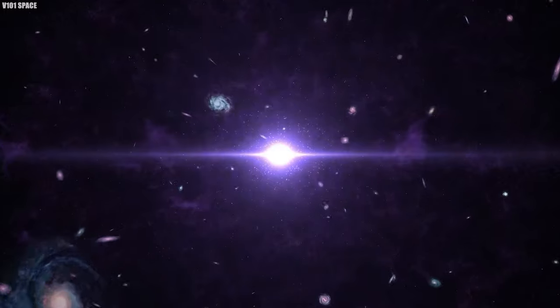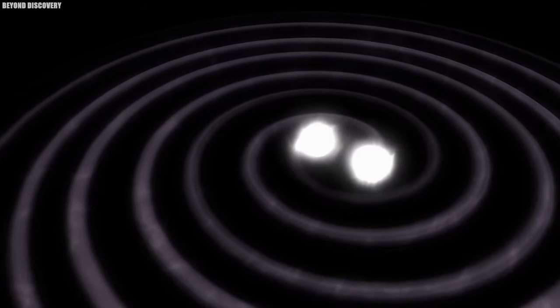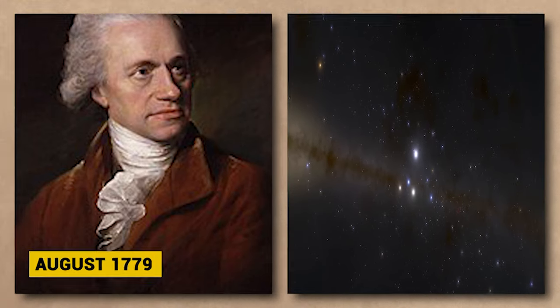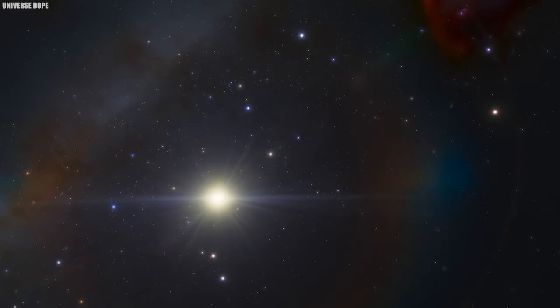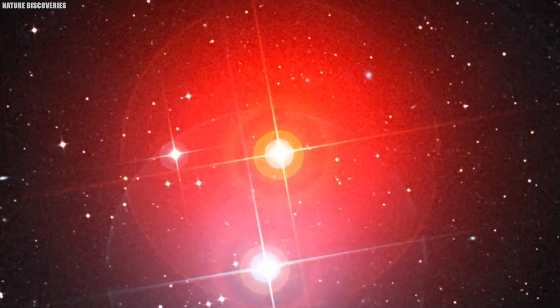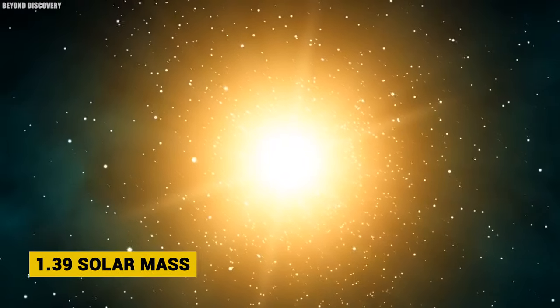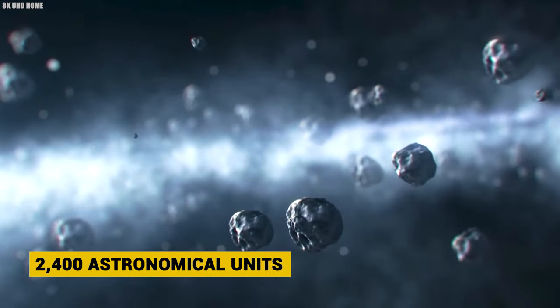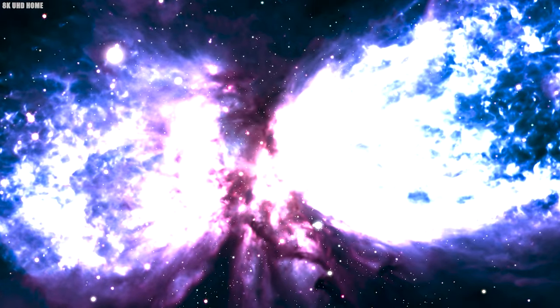Yet, the cosmic show continues as Polaris AA dances in unity with a smaller companion, Polaris AB. This stellar pair, discovered by the watchful eyes of William Herschel in August 1779, unfolds a celestial pas de deux, revealing the complex choreography of their gravitational embrace. As if this were not enough, the dance extends further to include a third celestial partner, Polaris B. A stellar companion observed with a modest telescope, Polaris B adds its shimmering notes to the cosmic symphony.